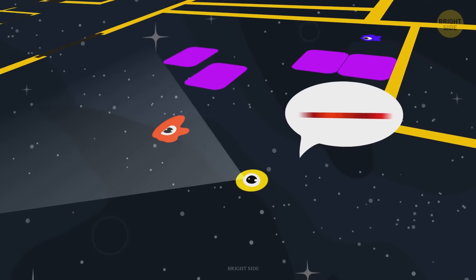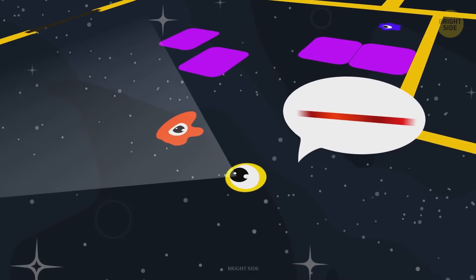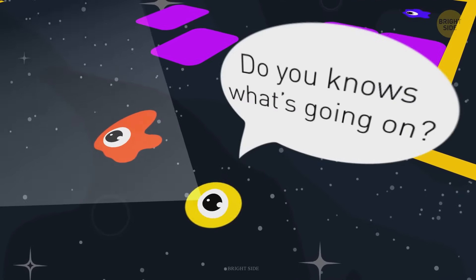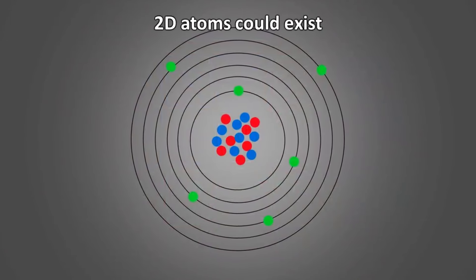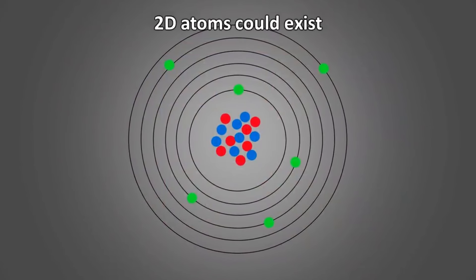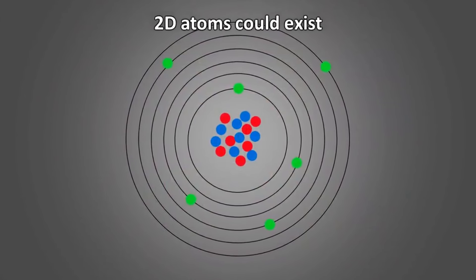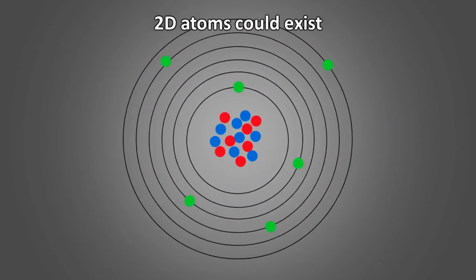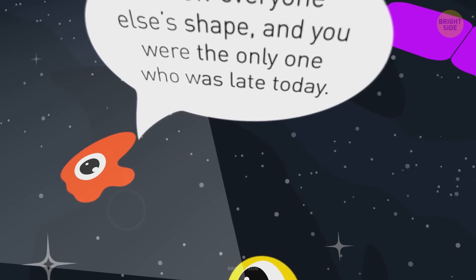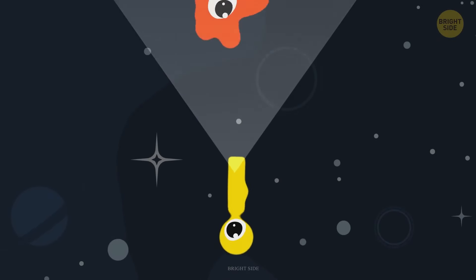Things could rotate in the plane of the universe, but nothing could twist. Chemistry would be very different. All atoms would have to connect in the plane of the universe to form molecules. This means no DNA, because a double helix would be impossible. This might mean only asexual reproduction is possible.